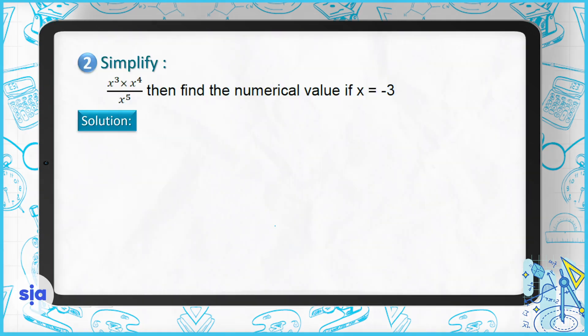Question 2 of the next section: simplify and evaluate x to the power of 3 times x to the power of 4, divided by x to the power of 5, given x equals negative 3. First simplify: x³ · x⁴ = x⁷, then x⁷ ÷ x⁵ = x². Now substitute x = negative 3: (negative 3) squared equals 9.